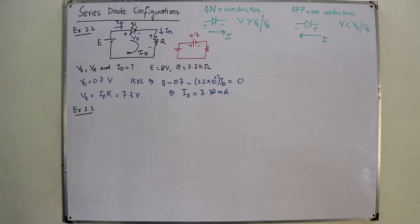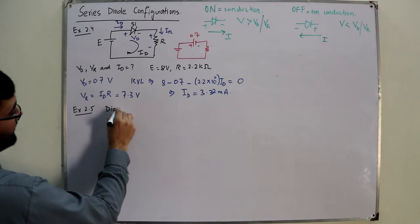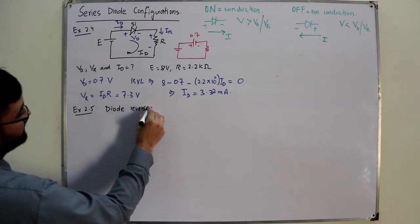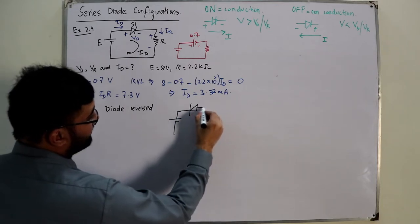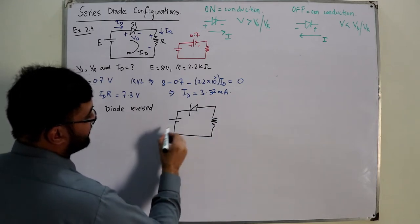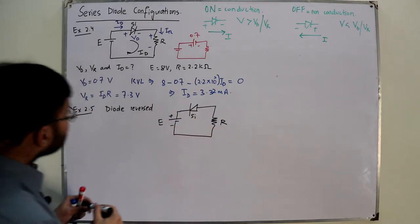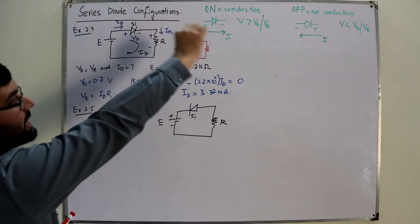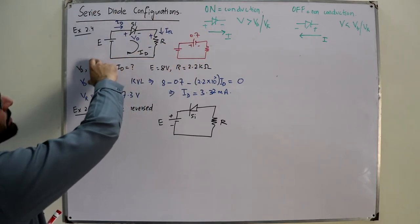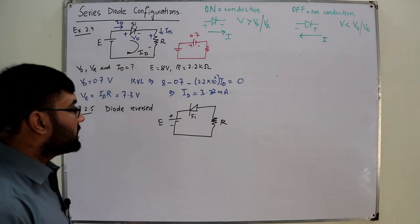Example 2.4 repeats example 2.4 with the diode reversed — this is example 2.5. With the diode reversed, using conventional current, the arrow of the current now opposes the arrow of the diode. In the previous case, the current arrow matched the diode arrow and the battery potential was greater than the barrier potential, so it was in the on state.